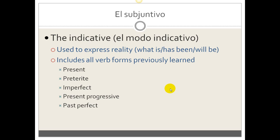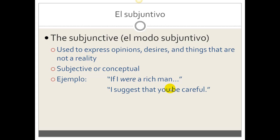Now in contrast to that, there's a whole new side of Spanish verbs that you're starting to learn about now with the subjunctive. The subjunctive is also a mood, el modo subjuntivo. In contrast with the indicative, it's used to express opinions, desires, and things that are not a reality. It is subjective or conceptual.